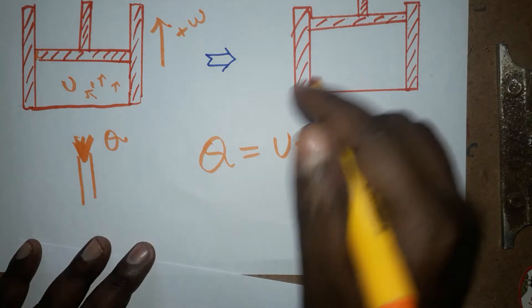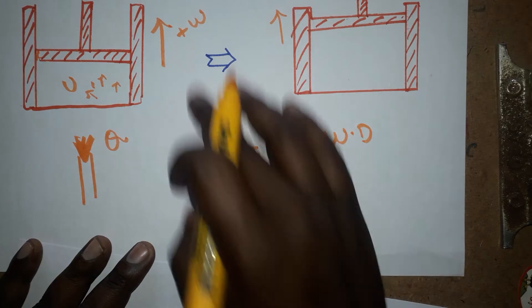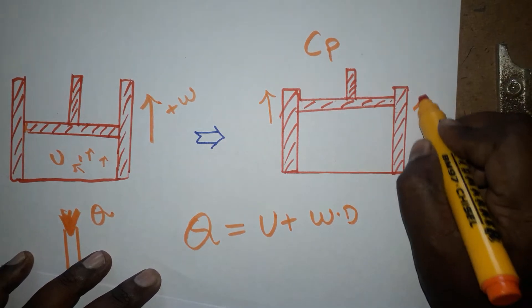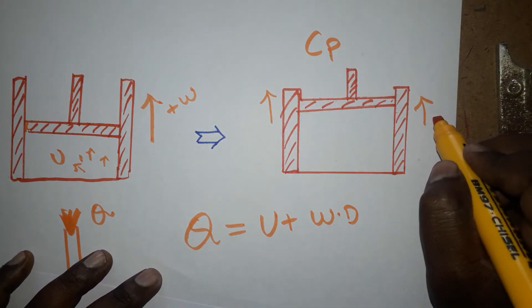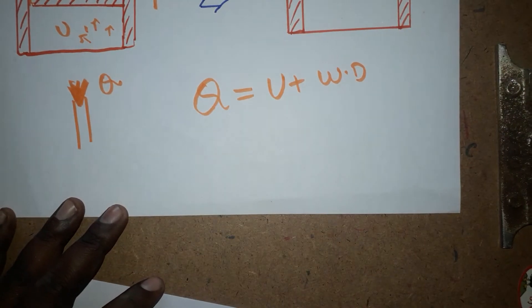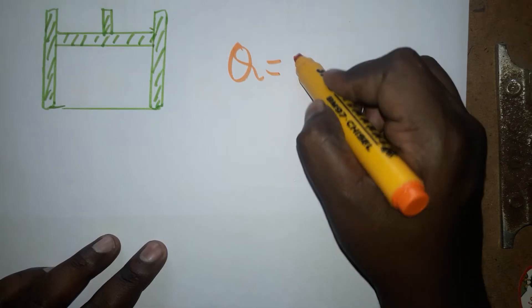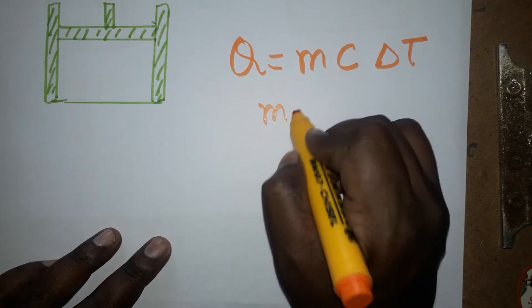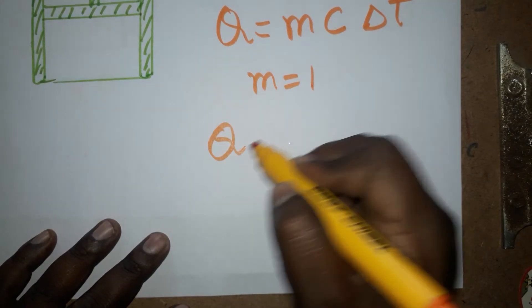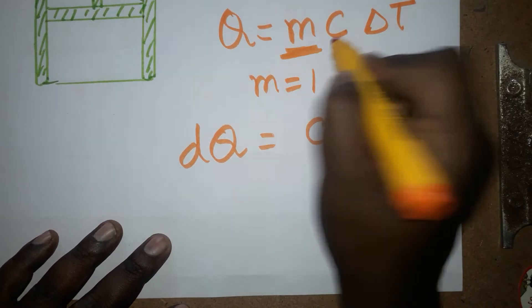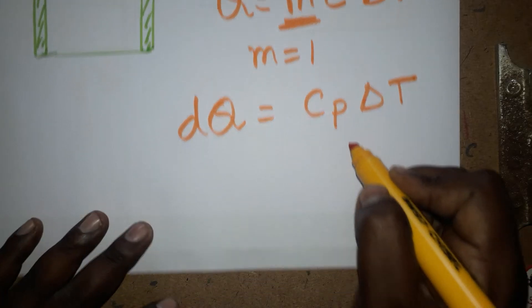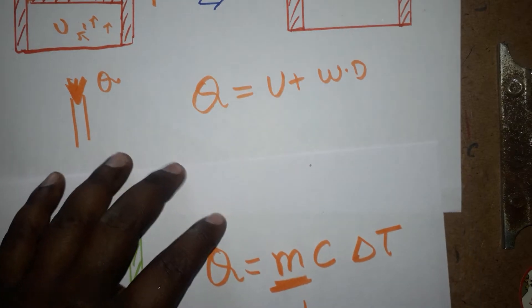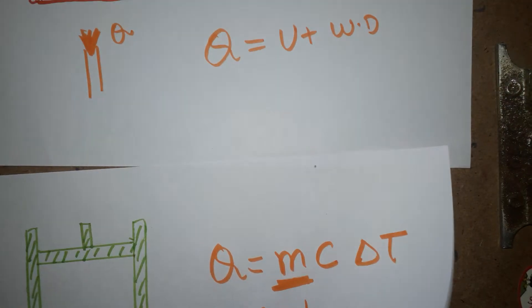When we heat the system, the piston moves up because the pressure is maintained constant, so the volume gets expanded. We know heat energy Q equals mass times specific heat capacity times change in temperature. Taking molar mass as one, the total given heat energy at constant pressure is Q equals Cp·dT.